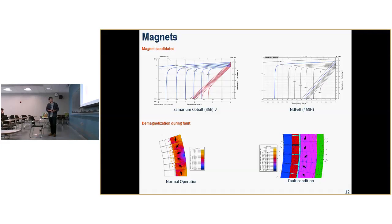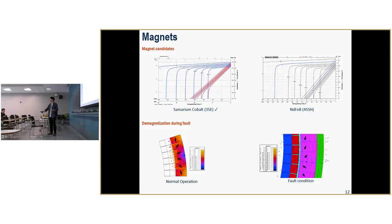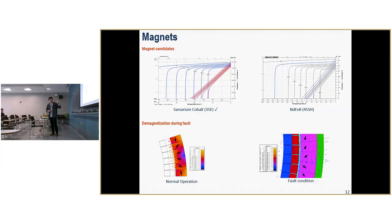For our permanent magnets, we have two choices. As of now, we've chosen samarium cobalt because our analysis shows the temperature on the magnet is going to be around 150 degrees Celsius. At that temperature, the remnant flux density between the two magnet types is comparable, so we're using samarium cobalt for now. Our choice might change after we do a rotor bench test for windage losses, since that's the biggest uncertainty as of now.